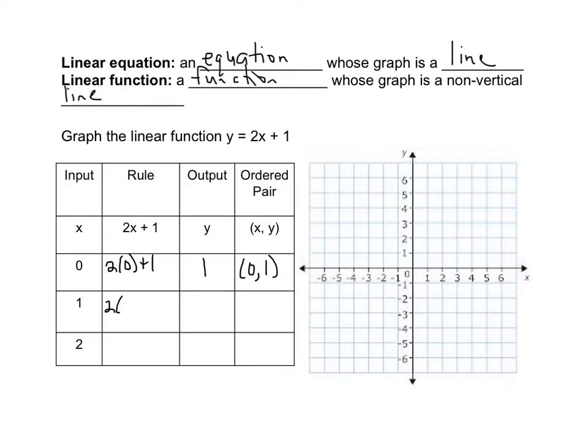So we have 2 times 1, which is 2, plus 1 is 3. And then our next would be 2 times 2, which is 4, plus 1, would be 5. So our ordered pair would be 2, 5.